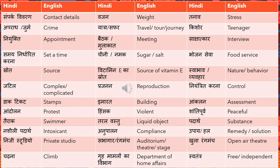The next word is 'sampark vivaran' meaning contact details. In dialogues they may ask you to share your contact details, so you translate that as 'sampark vivaran.' 'Tanav' means stress. 'Aparadh ya jurm' means crime. 'Yatra,' 'safar,' and 'kou' are all words for travel, tour, or journey — you can use any of these for travel, tour, or journey in Hindi.